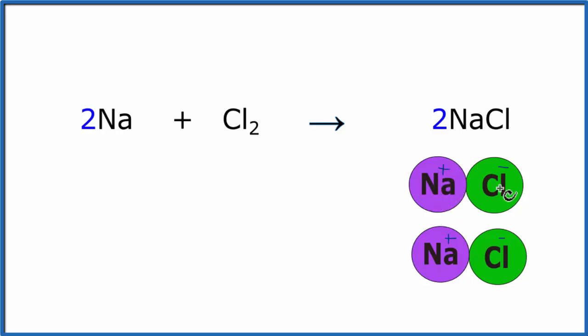That means the sodium gave an electron to the chlorine, and since it lost its electron, it's more positive. The chlorine got a negative electron, and it's negative.